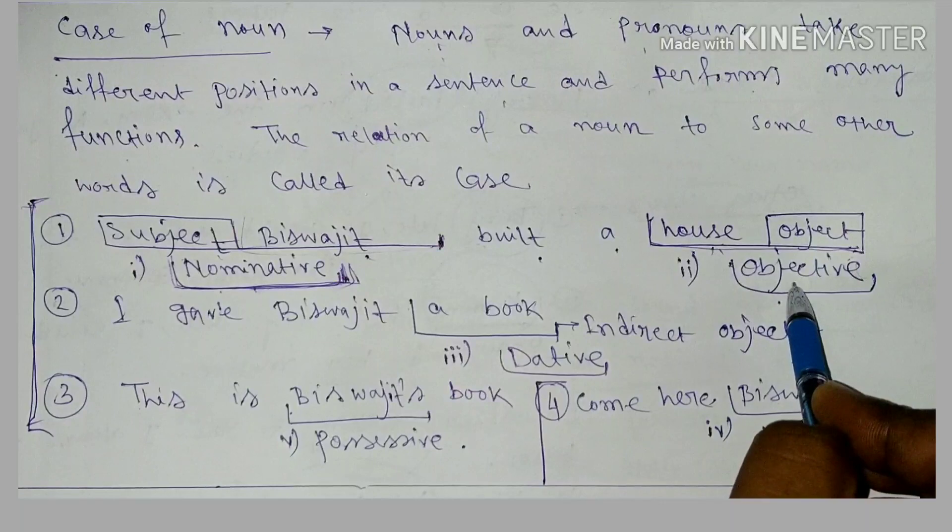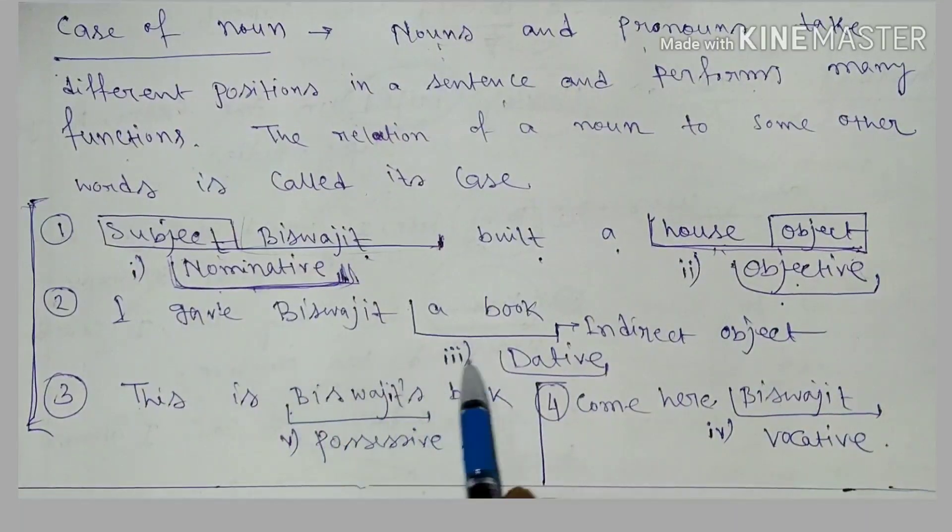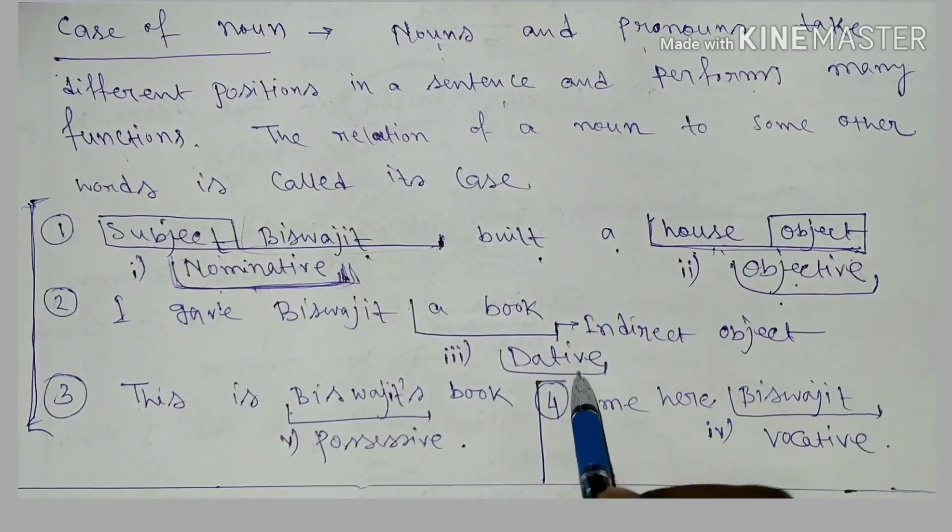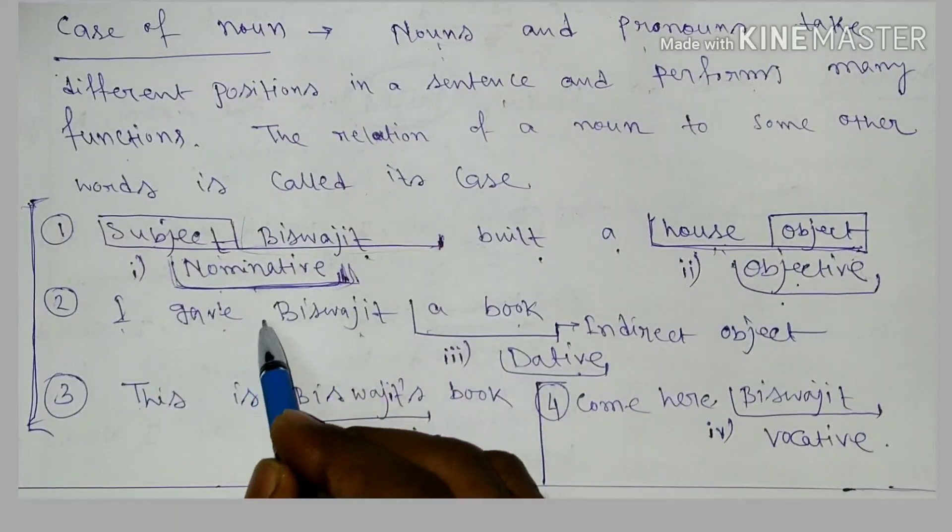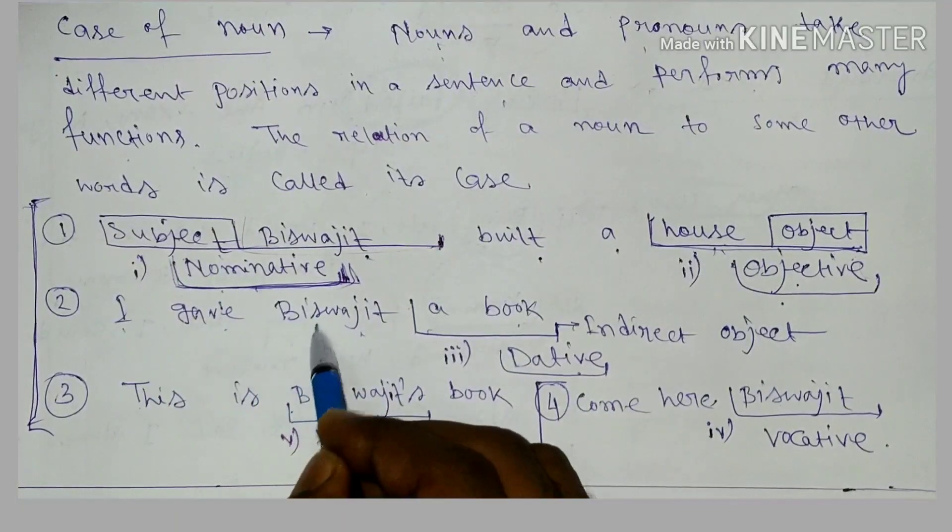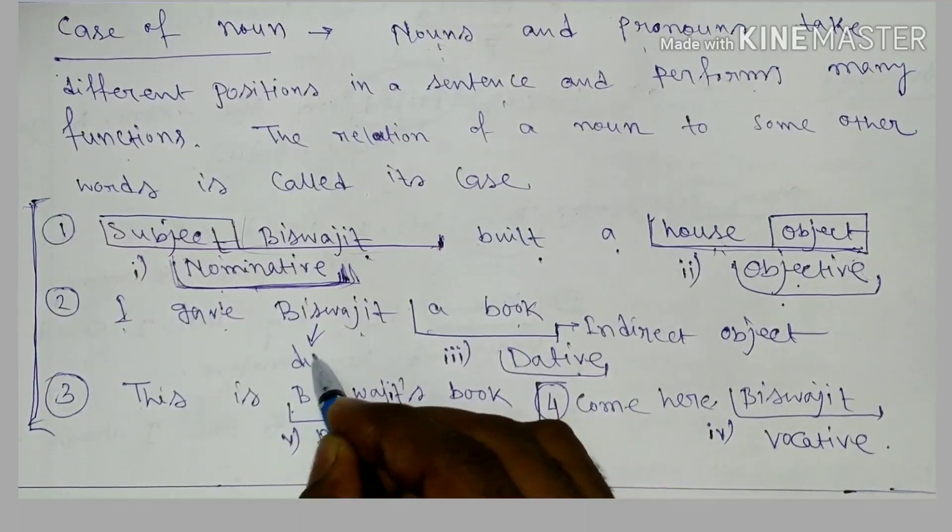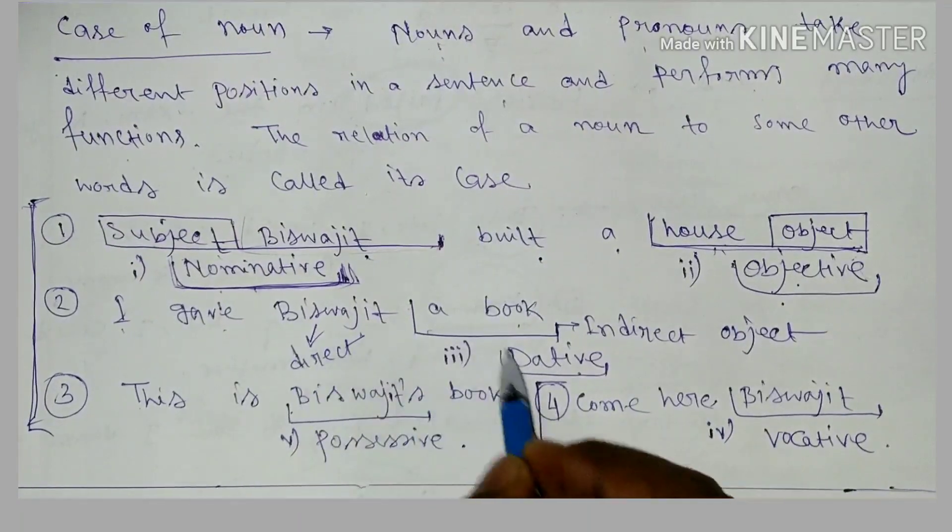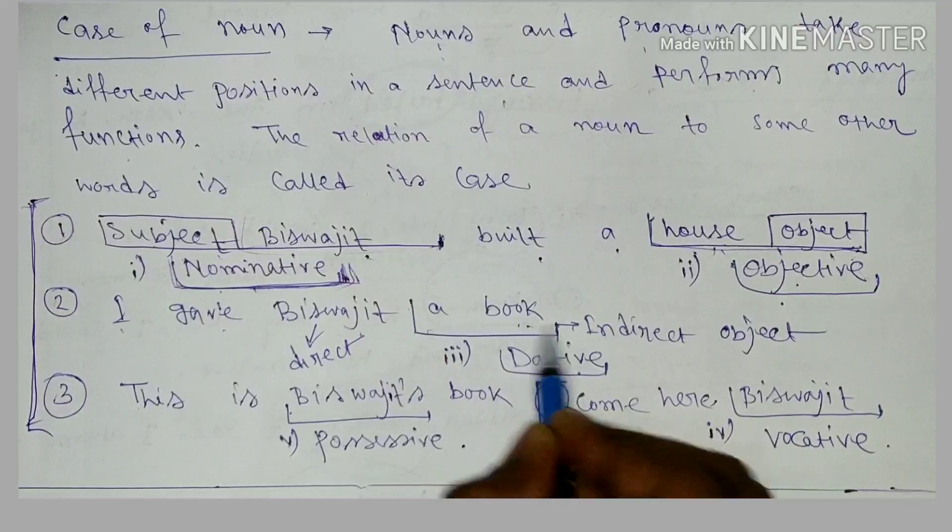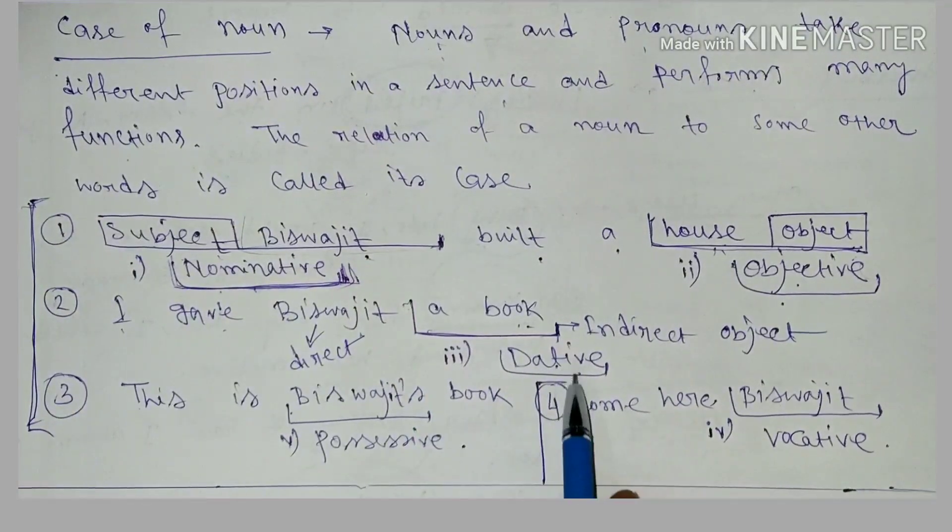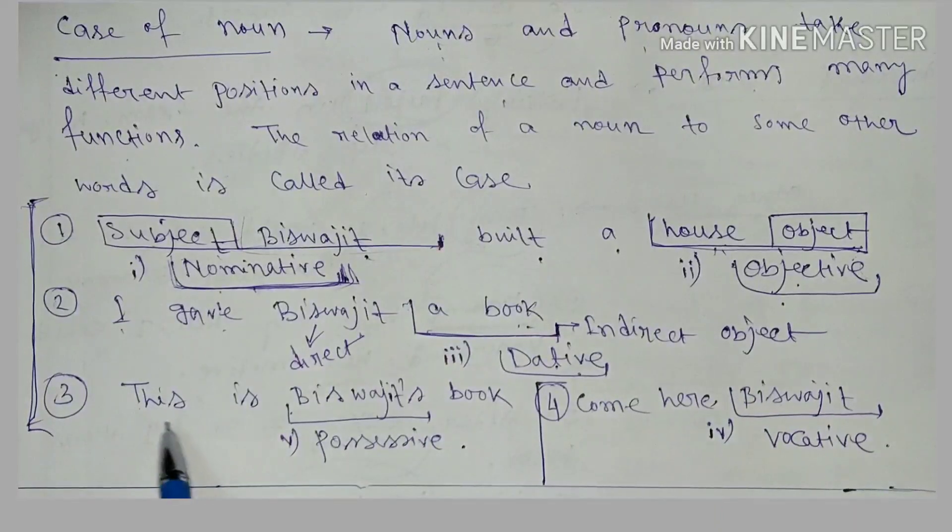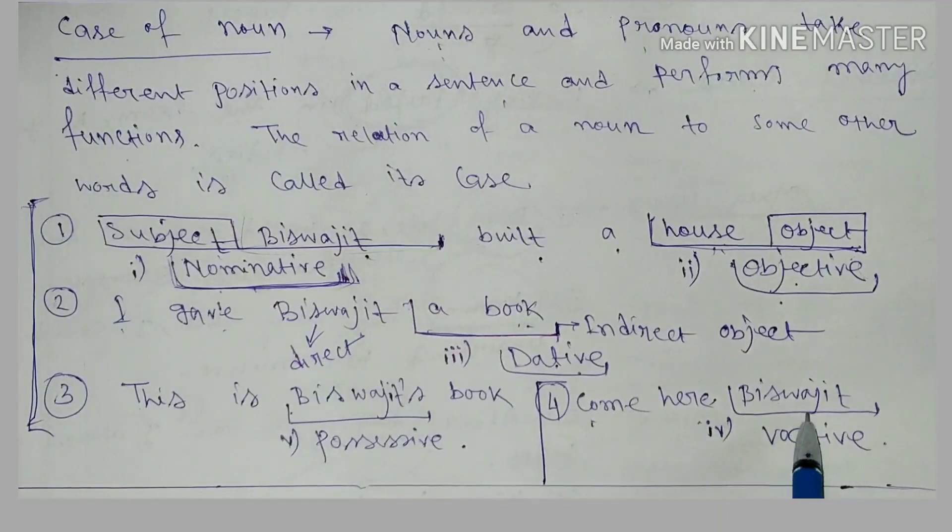Next is the third one, that is called dative case. I gave Sujit a book. In sentence number two, there are two objects. One is direct object, this is direct object, and the next is indirect object, that is book. This is the indirect object, also called dative.